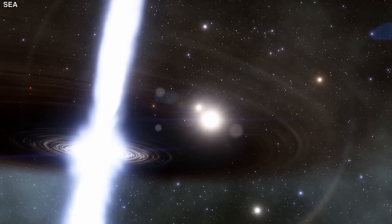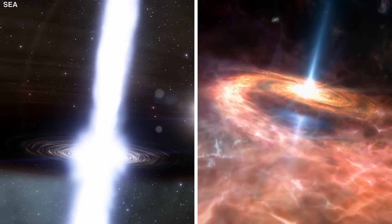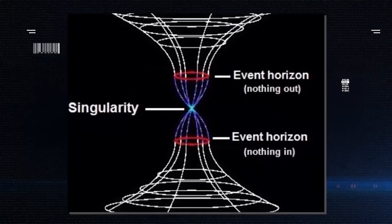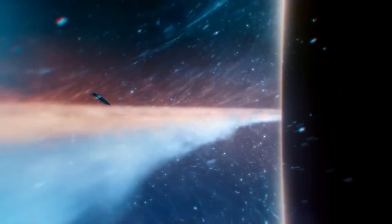This brings us to white holes. A white hole is the exact opposite of a black hole. In fact, it is a black hole viewed backward in time.